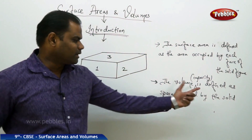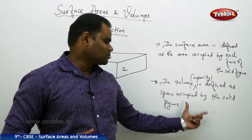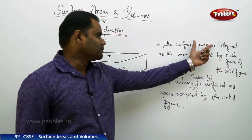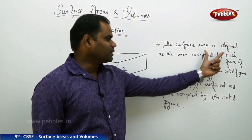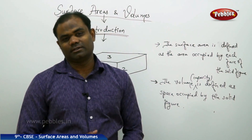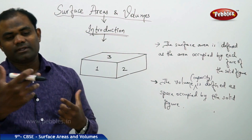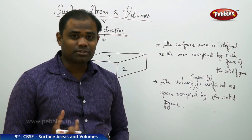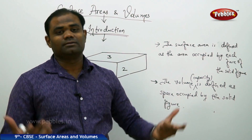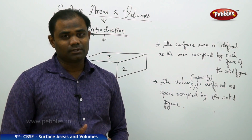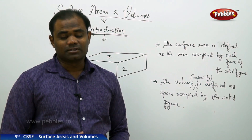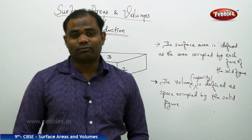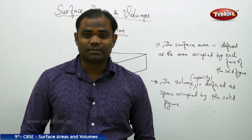So the volume is defined as the space occupied by the solid figure, and the surface area is defined as the area occupied by each face of the solid figure. Each face's area added up gives the surface area, and the space which the object occupies is defined as the volume of the solid figure. This is how we understand the surface area and volumes of a three-dimensional object.